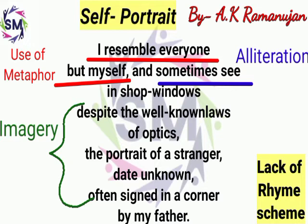These are very important lines. Whenever he walks past shop windows, he doesn't see himself but sees a stranger. When the reflection in the shop window looks back at the poet, it doesn't look like him — it looks like a stranger's reflection. 'The portrait of a stranger, date unknown, often signed in a corner by my father.' A portrait is seen in various photographs; it has been painted on the corner side. He actually suffers an identity crisis even in reflection — a lack of focus on his own life and a lack of identity.